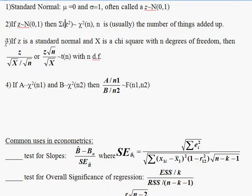Now if z is a standard normal and x is a chi-square with n degrees of freedom, then if you take that chi-square, take the square root, divide it by the square root of n — which is usually the degrees of freedom — and on the top of the fraction you have a standard normal, then that is the definition of a t-distribution.